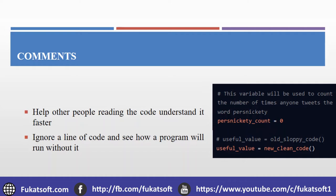We have two types of code: sloppy code and clean code. If we have different lines we don't want to run, we can comment them out. It is better to use a comment for future use rather than deleting lines, so we can create different code files and use them easily.